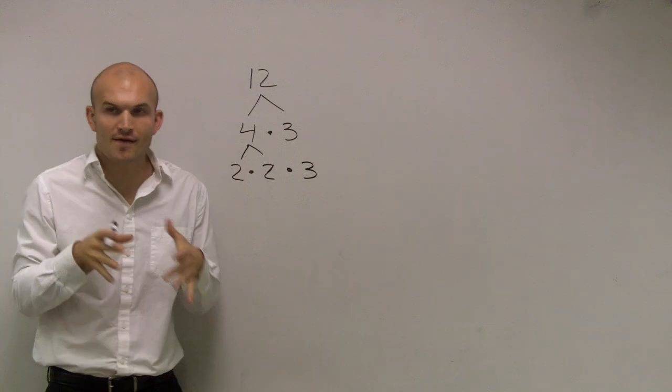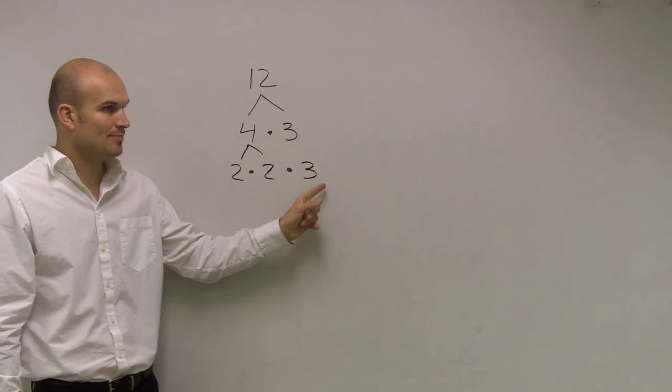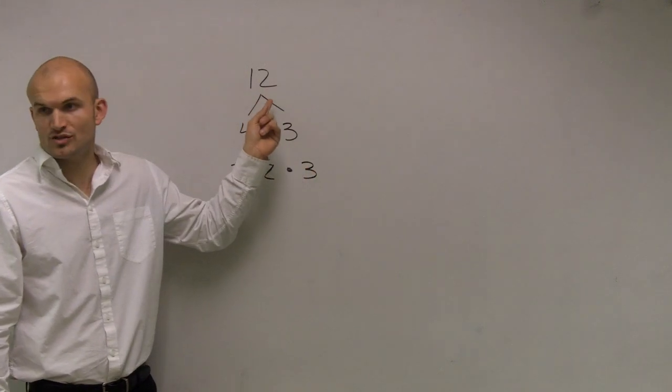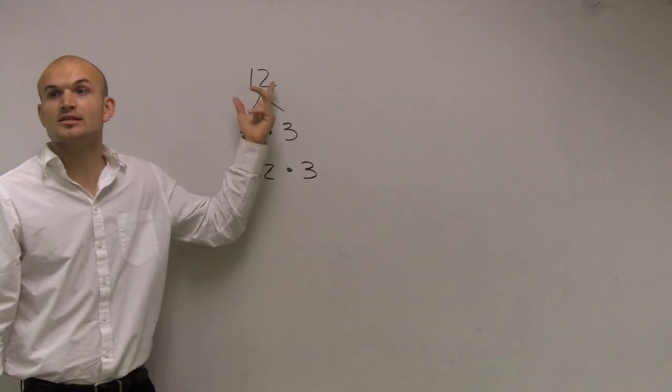So therefore now, have I written this out as a product? That means the multiplication of all prime numbers. And does 2 times 2 times 3 give me 12 when I work back to it? 2 times 2 is 4. 4 times 3 gives me 12.